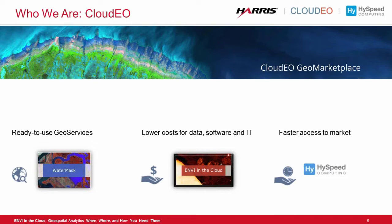CloudEO is a geo-marketplace which simplifies the geobusiness for customers and partners. Our customers can save cost and administration efforts with ready-to-use geoservices, such as ENVI Cloud or the water mask from High Speed Computing. These services include solutions for many industries varying from agriculture to urban planning, as well as multipurpose remote sensing imagery, elevation data, thematic maps, software, analytics, and a secure and scalable ICT infrastructure. Our CloudEO partners have the opportunity to expand their market reach and increase their competitiveness with new business models for data, software and IT, all enabled by CloudEO's unique cloud architecture.